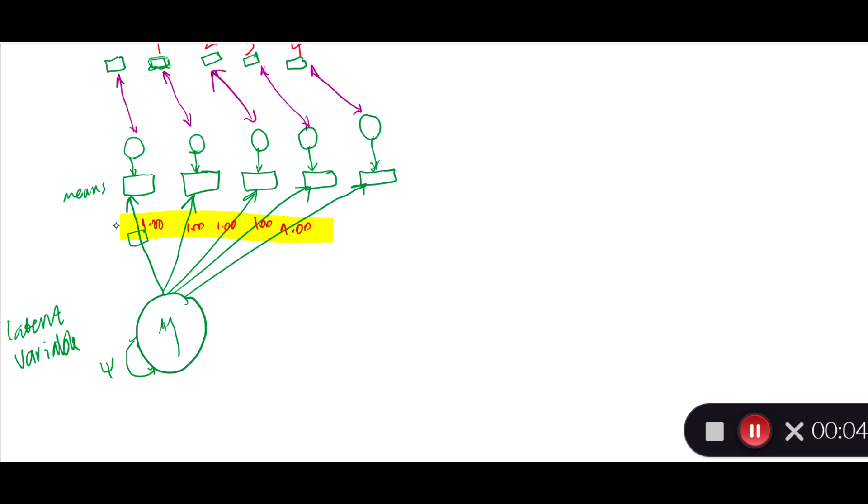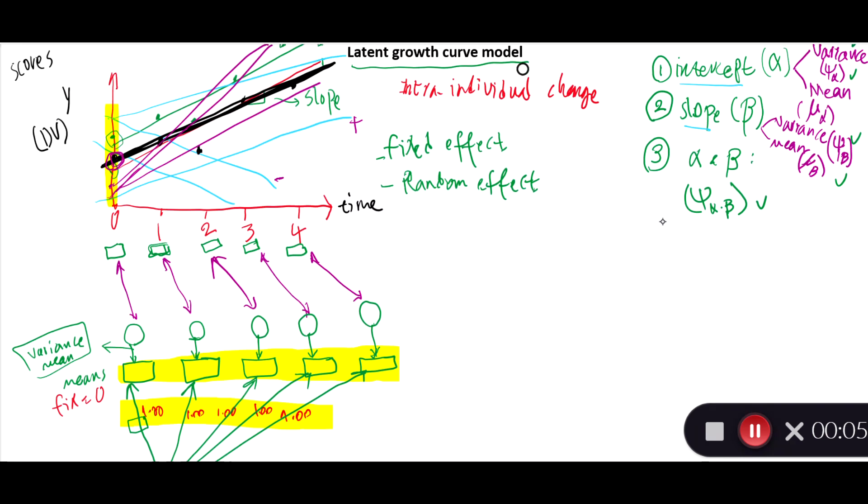The other thing that we need to fix to 0 is basically the means, the mean scores. So, I've got to fix it to 0 of the items as well. What do we want to look into? We want to look into the variance and mean of the residuals.